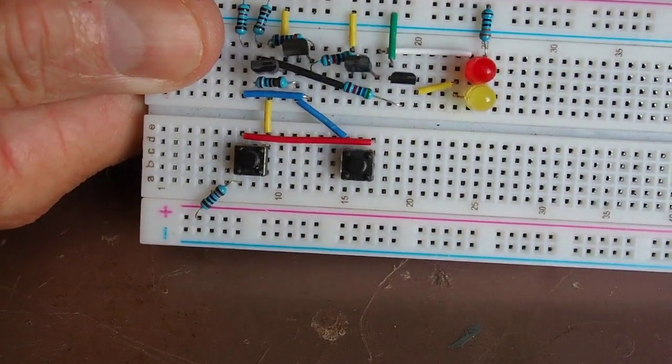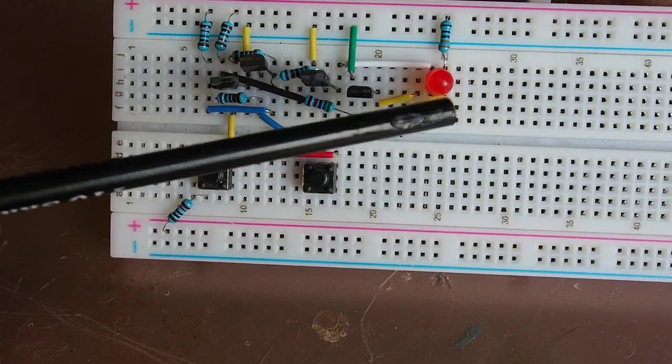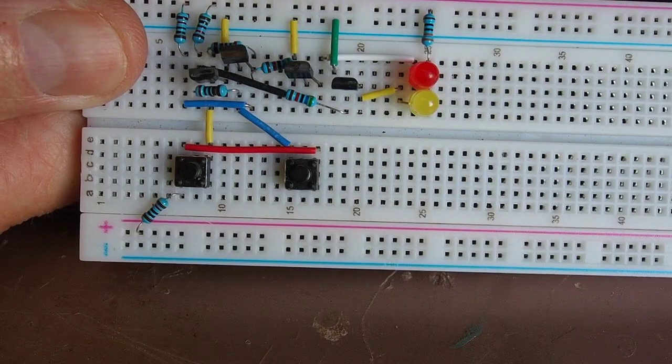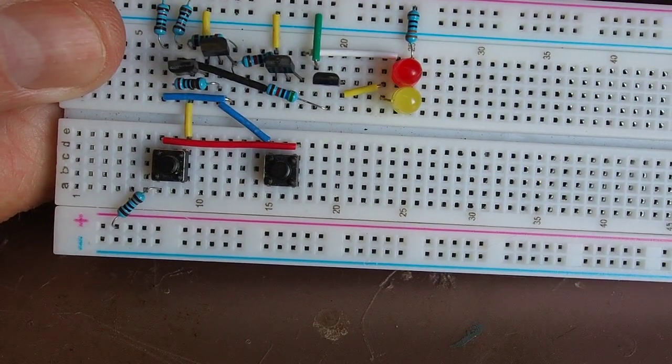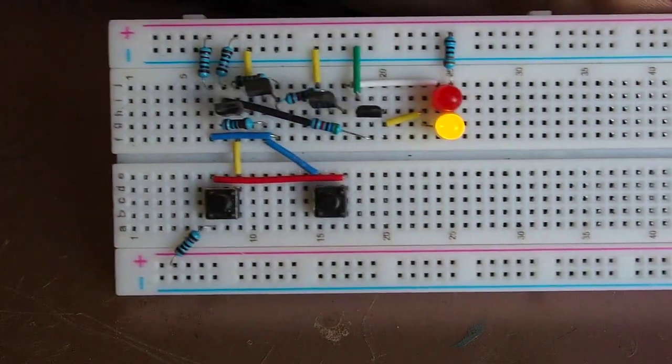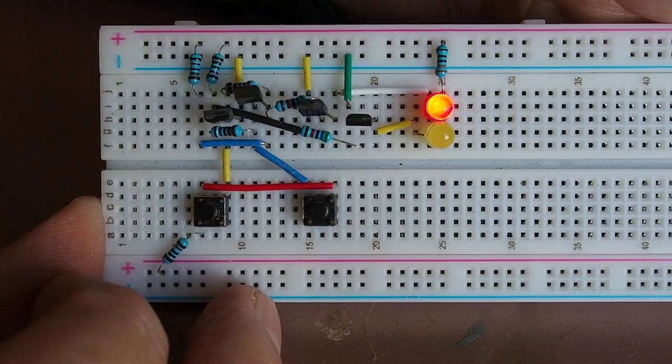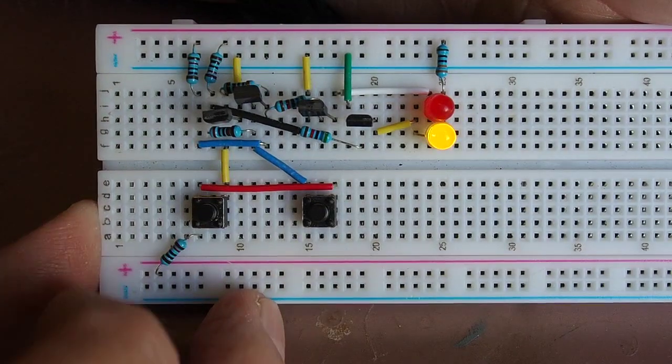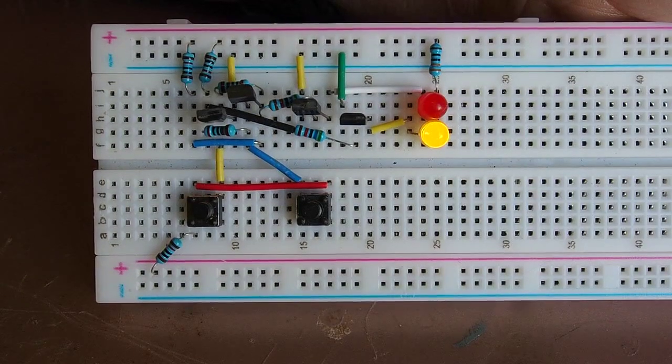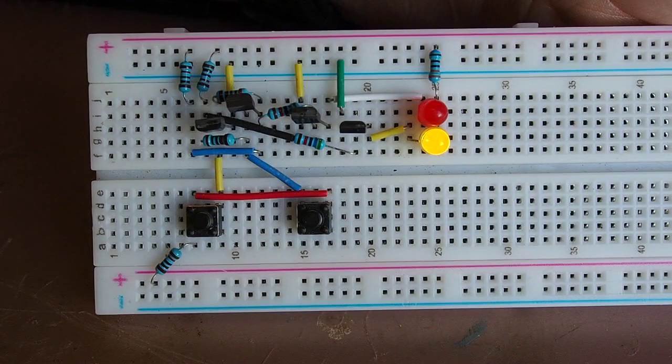If I switch power on, in this configuration we can consider the red LED to be Q and the yellow LED to be bar Q, so one and zero if you like. When we apply power, the state that it starts up in is not predictable. As it happens here, it started up in bar Q or logic low. Now by pressing the relevant button, we can switch the latch over and it remains in that state as long as power continues to be applied.